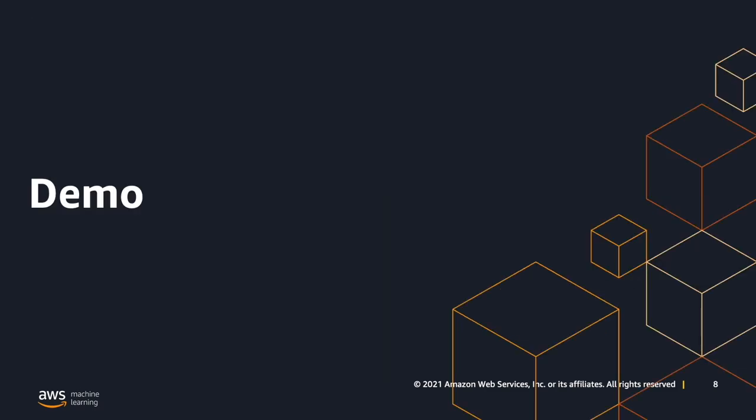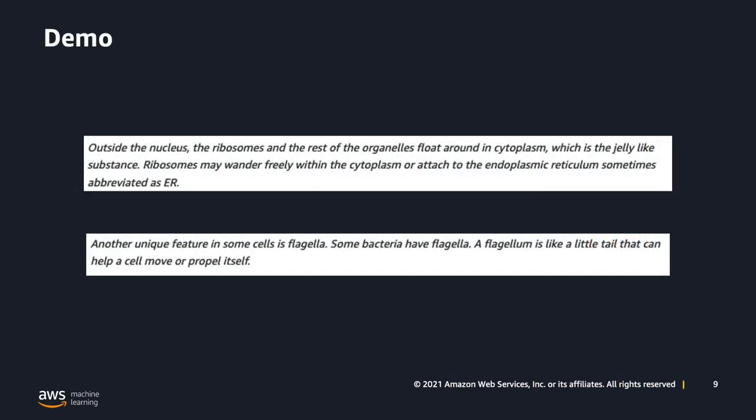Let's now look at how we can create a custom language model and analyze its transcription results. For the purposes of this demo, we'll be transcribing biology lectures. As we know, biology contains a lot of terms which have very specific pronunciations. We'll be gathering training data from Wikipedia articles on some key terms in the biology domain. Using a blog authored by a friend of mine, I use the sample code to fetch the Wikipedia articles and save it in the desired format for training the custom language model.